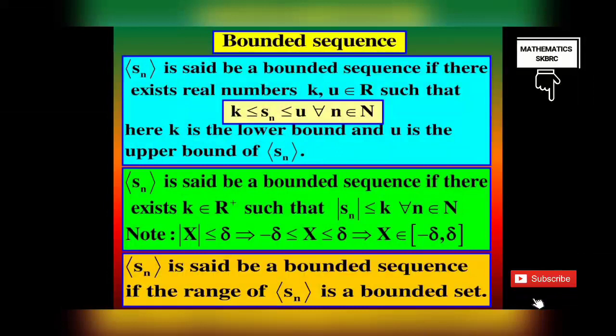Another definition: A sequence SN is said to be a bounded sequence if there exists a positive real number K belonging to R+ such that |SN| ≤ K for all N belonging to N. Here |x| ≤ δ gives -δ ≤ x ≤ δ, meaning x belongs to the closed interval [-δ, δ]. Another definition: A sequence SN is said to be a bounded sequence if the range set of SN is a bounded set.